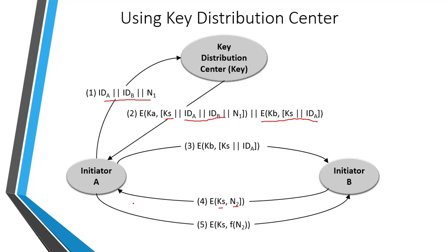Note that the actual key distribution involves steps 1, 2, and 3. Steps 4 and 5 are the authentication steps, while steps 1, 2, and 3 are the actual key distribution steps. In this way, using the key distribution center, session key KS is shared between the initiator and the sender and receiver. Thank you.